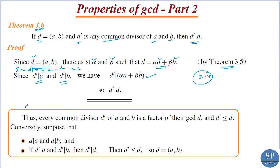So we have: every common divisor d-dash of a and b is a factor of their GCD. Every common divisor d-dash of a and b is a factor of the GCD d, and d-dash is less than or equal to d. That is what we proved in the previous theorem.